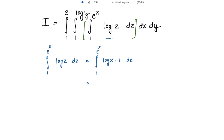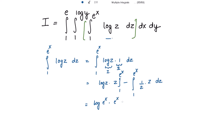Using integration by parts, let the first function be log(z) and the second function be 1. So we get: log(z) times z, evaluated from 1 to e^x, minus the integral of the derivative of log(z) — which is 1/z — times z dz. Evaluating at the upper limit gives log(e^x) times e^x; and since log(1) = 0, the lower limit term vanishes.